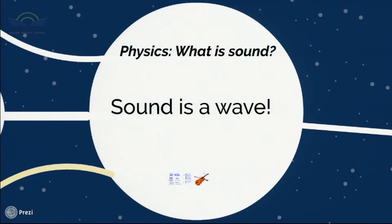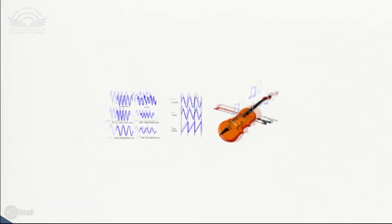To start our journey, we're going to have to understand that sound is a wave. Chances are that you probably have heard of the term sound wave, so let me introduce you to it. These here on the right are sound waves. A sound wave is created by a vibrating object that sends a wave through a medium. For example, the vibrating object on a violin would be the strings. But in order for us to truly understand a sound wave better, we need to talk about the parts and characteristics of the sound wave.